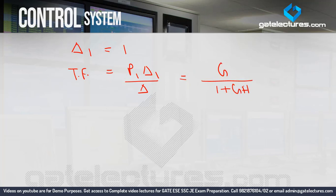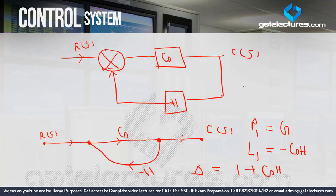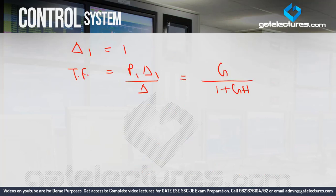If you remember the first video of control systems, we calculated the transfer function of this same standard block diagram for negative feedback, and our answer was G upon 1 plus GH. Here too, our answer is G upon 1 plus GH. So if you understand this carefully, you can convert any block diagram into signal flow graph and calculate your answer. For larger block diagrams, solving via signal flow graph is much easier.